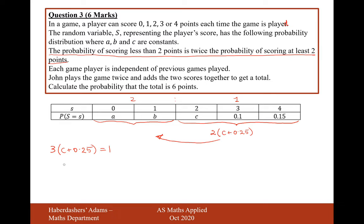So there we are, so we'll now have C plus 0.25 equals a third, and then subtract 0.25. So 1 divided by 3, take away 1 divided by 4, is 1 divided by 12. So C is equal to 1 divided by 12. So we'll just call it 1 over 12, this probability here.